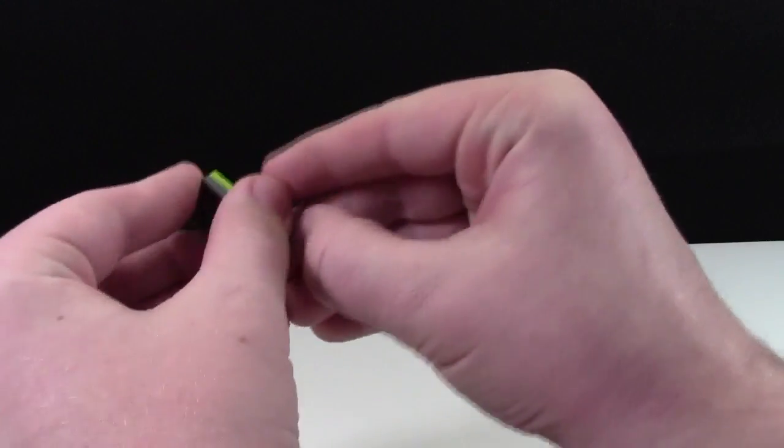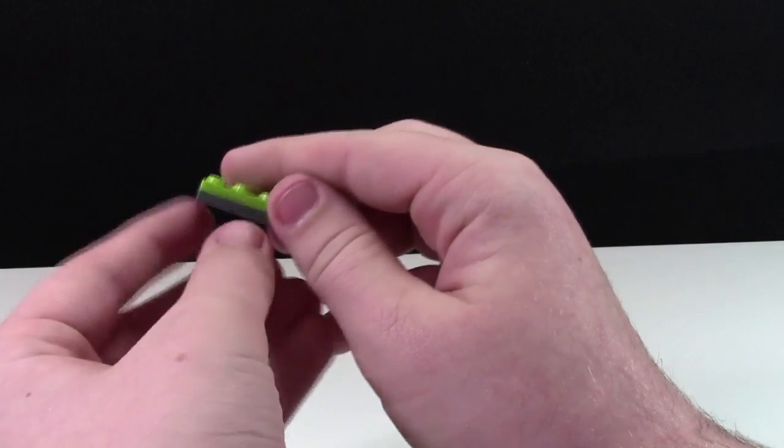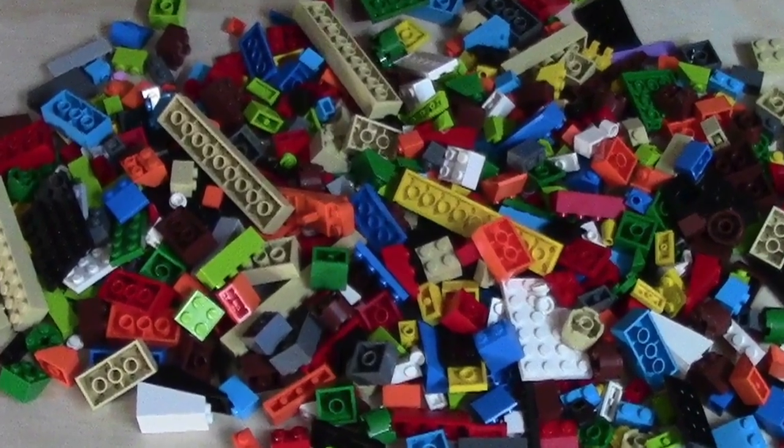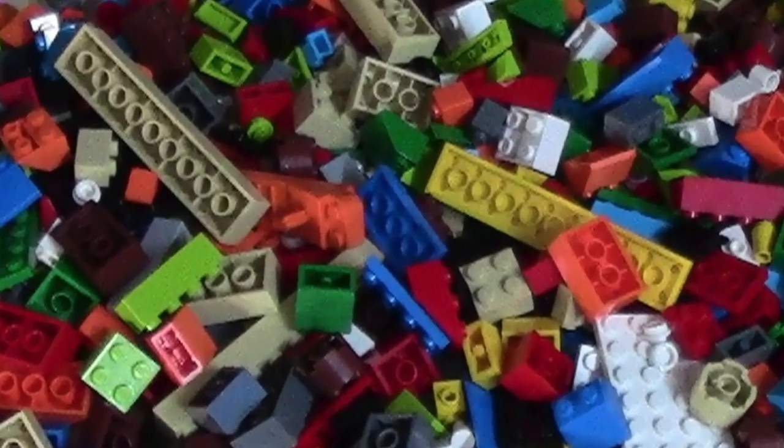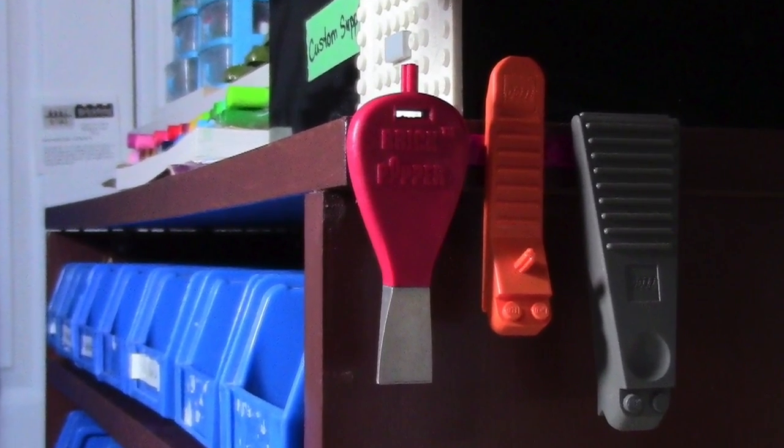Do you ever find that when you're building a LEGO MOC and you get two LEGO pieces stuck together and you just can't get them apart, and when you go to get your brick separator to separate them you can't find it because your desk is so cluttered with LEGO? Well in this video I'm going to show you a simple solution so you'll never lose your brick separators again.